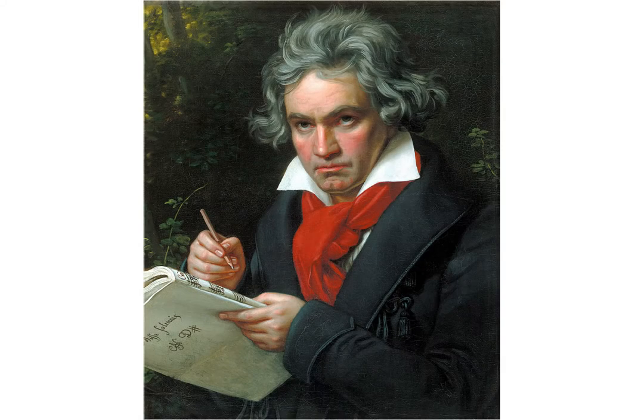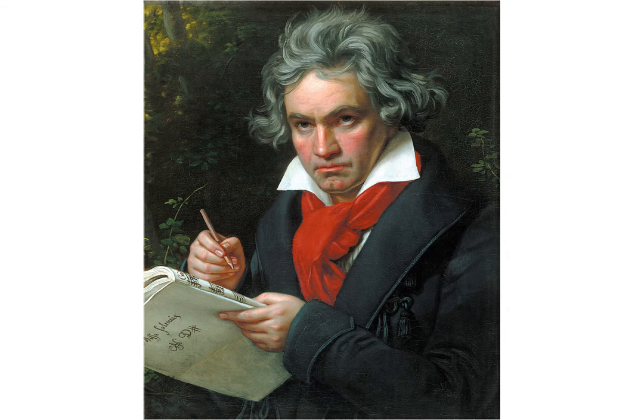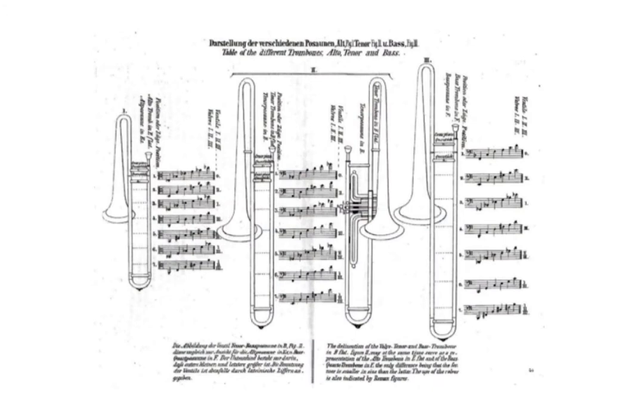Beethoven's Fifth Symphony is one of the earliest uses of trombone in a symphonic work that has had the most historical impact. There are usually three trombones in a standard orchestra setting.